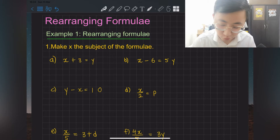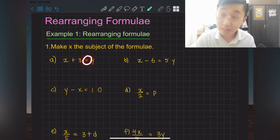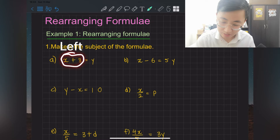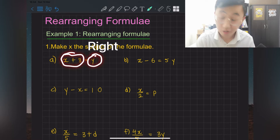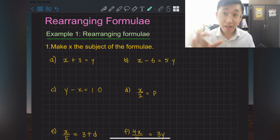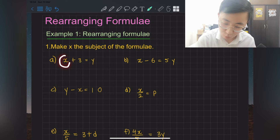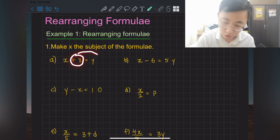Question one: rearranging formula — make x the subject of the formula. Pay attention to the equal sign. The left hand side and right hand side are separated by it. When you say 'make x the subject,' you want x on the left hand side. This one stays on the left, so I'm going to shift the plus 3 towards the other side.